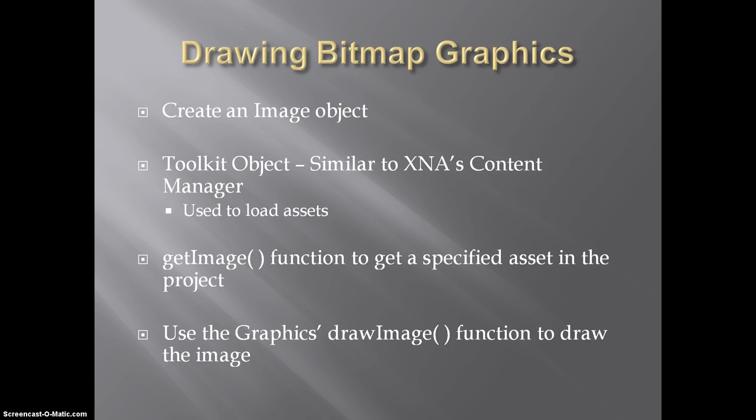Now, the second type of graphics supported by Java 2D is the bitmap or raster graphics. And you can think of this as drawing or copying an image pixel by pixel. And any transforms done on bitmap graphics affect the pixels rather than some mathematical algorithm, which can lead to loss of quality in some cases. Now, loading and drawing bitmap graphics is a bit different than drawing vector graphics. However, if you're familiar with loading content in XNA, the process here is similar. First you create a toolkit object, which is similar to the content manager in XNA. And you use the get image method, specifying the name of the asset you want to load. You store this in an image object, and can then use the Graphics 2D draw image method to draw the image. And we'll be looking at this a bit more in our second code example.